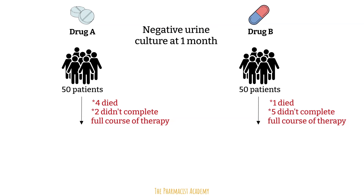In an intention to treat analysis, when we calculate the number of patients with a negative culture at one month, we also include the patients who died during the study and the ones who didn't complete the treatment. So let's assume the final result was 31 out of 50 for drug A.